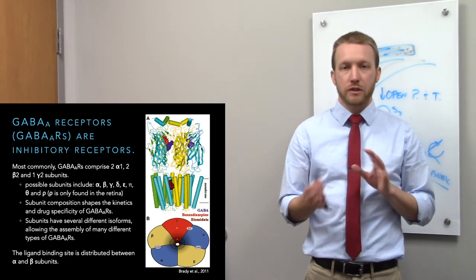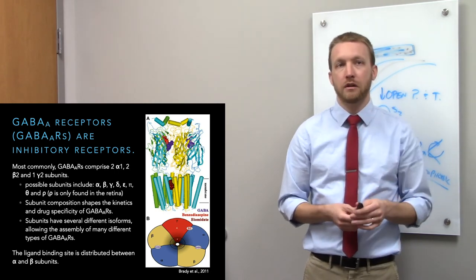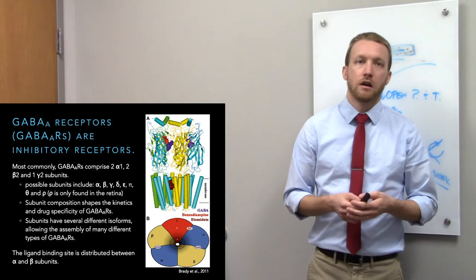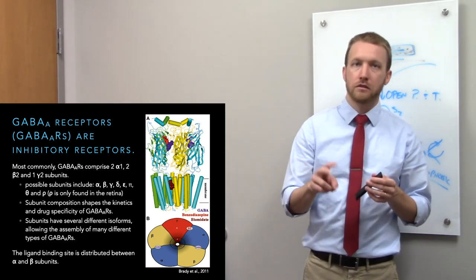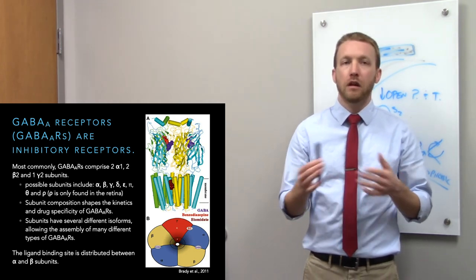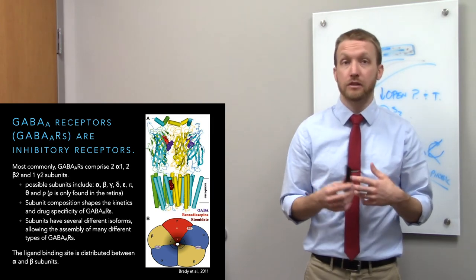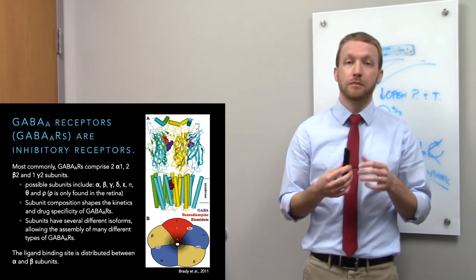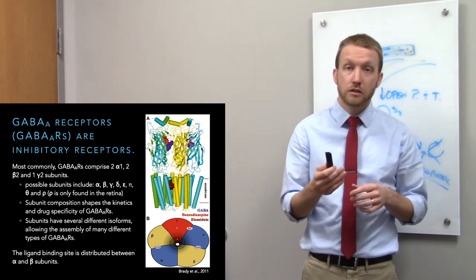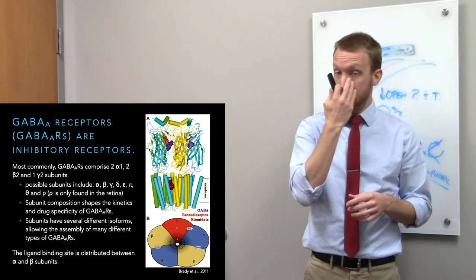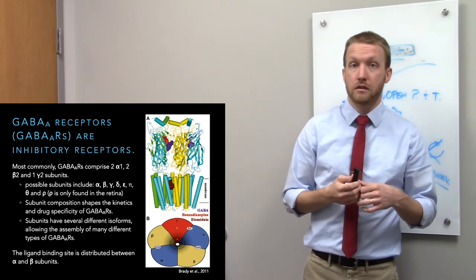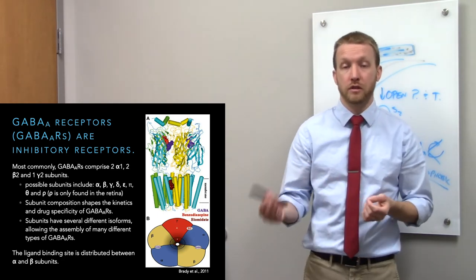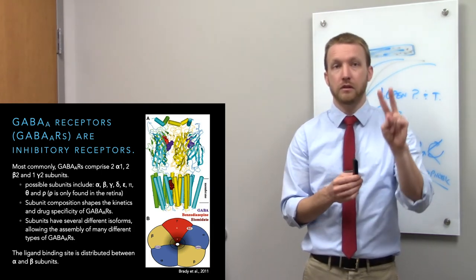Switching to GABA receptors: these are inhibitory and still pentameric. There are a variety of subunit types similar to nicotinic acetylcholine receptors. The most common composition is 2 alpha, 2 beta, and 1 gamma, though other subunit combinations exist. Both alpha and beta subunits must be present because the GABA binding site forms between them. Different drugs bind at different sites — for example, benzodiazepines bind between alpha and gamma subunits — so receptor composition determines drug sensitivity.